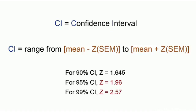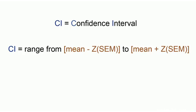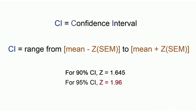To reiterate: the confidence interval equals the mean plus or minus Z times the standard error of the mean. For a 90% confidence interval, Z is 1.645. For 95%, Z is 1.96 or 2 to keep it simple. And for 99%, Z is 2.57.